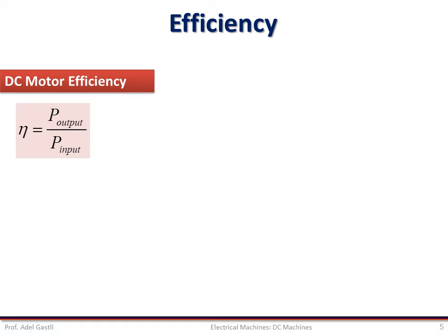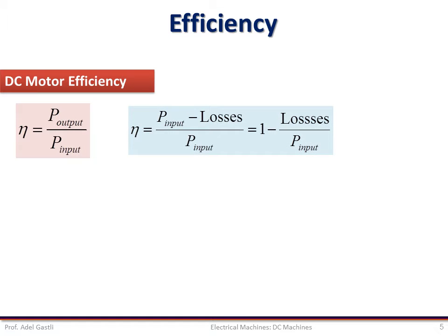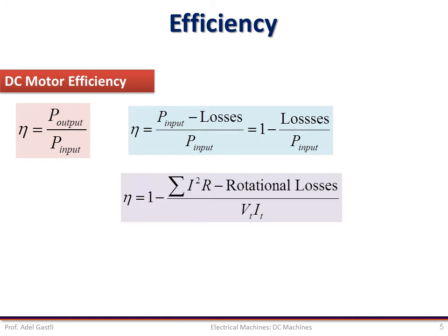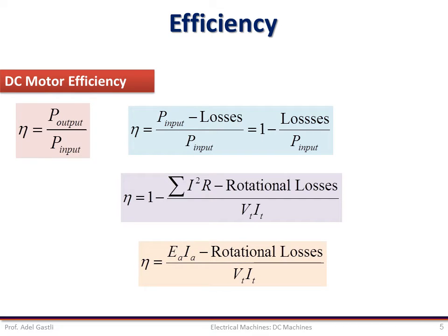Based on the previous power flow diagrams, it is easy to find the efficiency of the machine by taking the ratio of output power over input power. Considering output power as input power minus losses, the efficiency equals 1 minus the ratio of total losses over input power. Replacing input power by VT × IT for the motor case, and total losses as the sum of copper losses in all resistances plus rotational losses, we can write and also express efficiency as a function of armature back EMF, current, terminal voltage and current, and rotational losses. Depending on what variables are known, several equivalent efficiency expressions can be used.